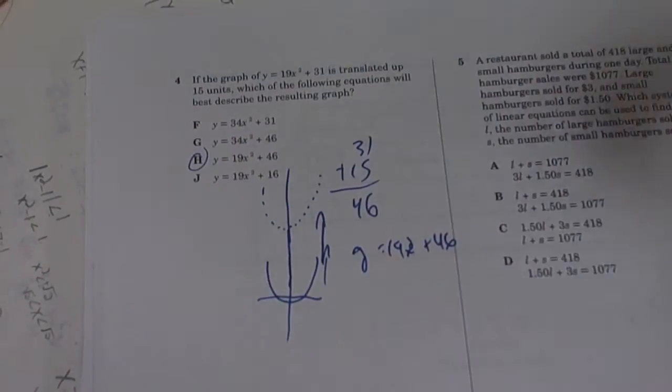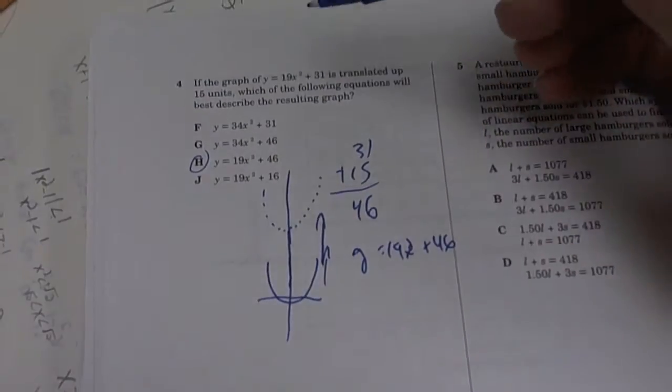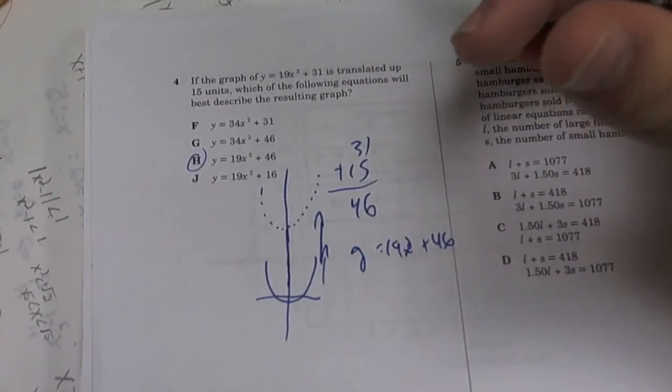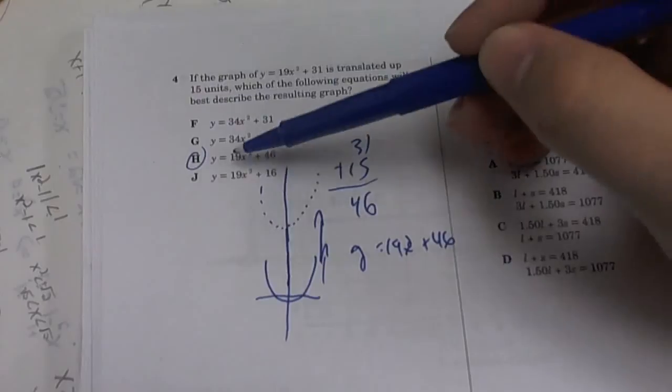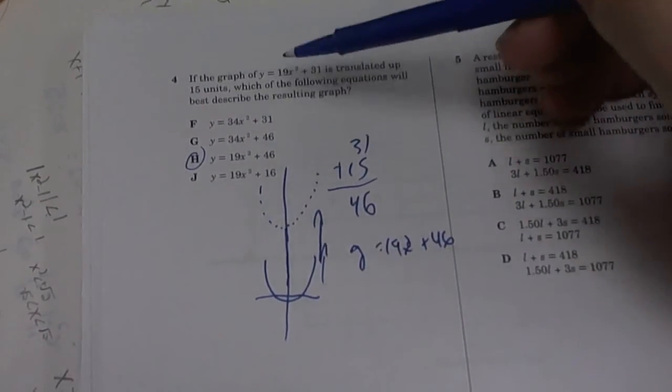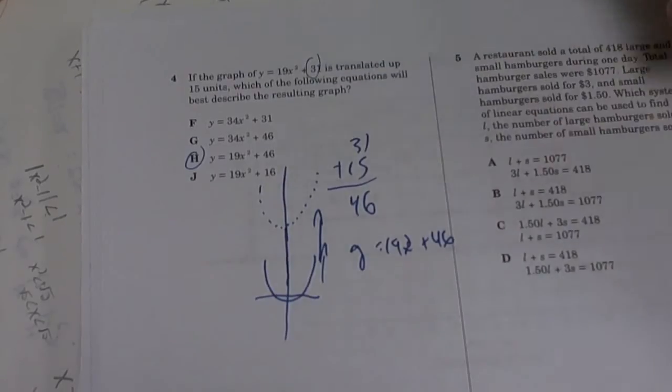So you do not mess with the 19x. If they ever say make it, if it was like wider or narrower, then yes we'll mess around with the 19. But it says translated up. So we only mess around with that one.